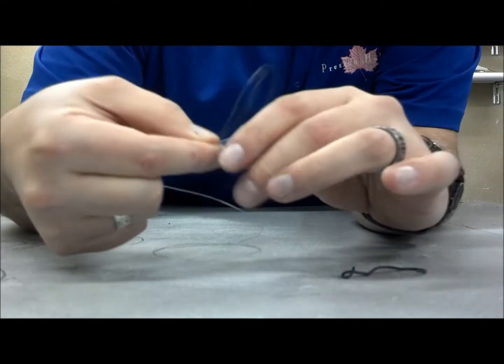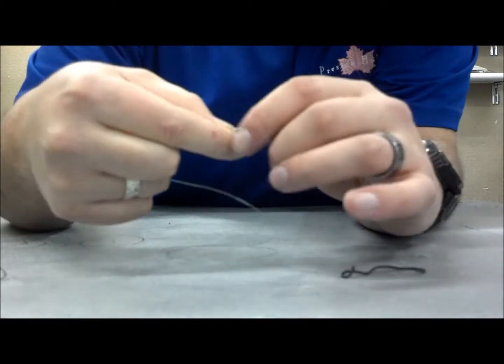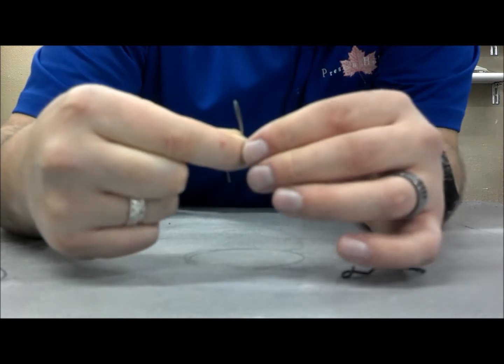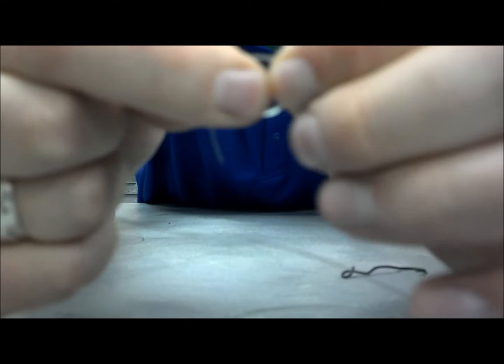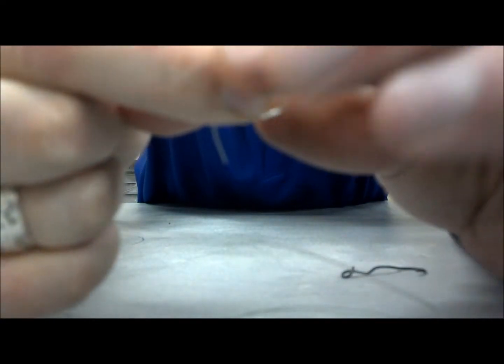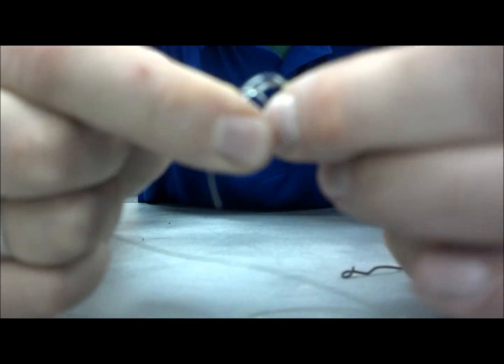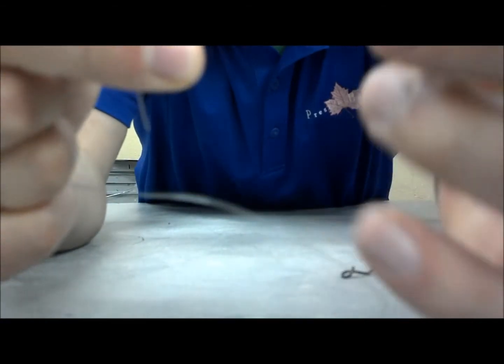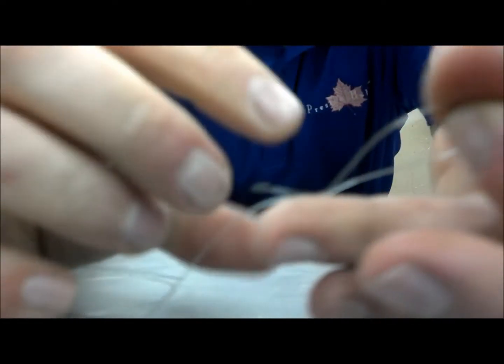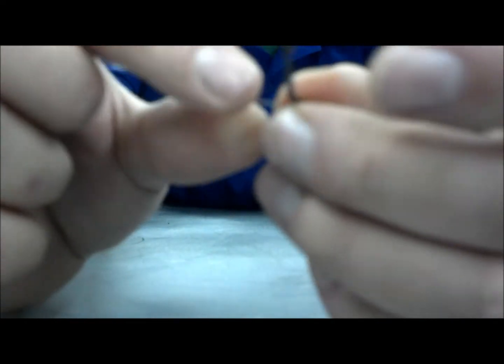I like to make a loop and run that loop around my finger, grab this part and pull it off my finger, and run the loop through. And there, cinch it tight, cut off your tag end.